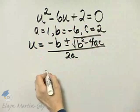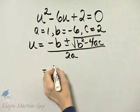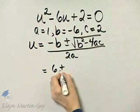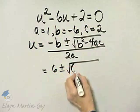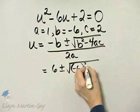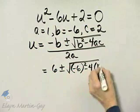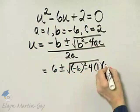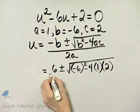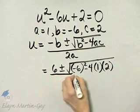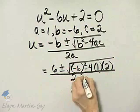So let's see what we have. Minus a negative 6, so that is positive 6, plus or minus the square root of b squared, that's negative 6 quantity squared, minus 4, times a is 1, times c is 2, all over 2 times a, and that's 2 times 1.